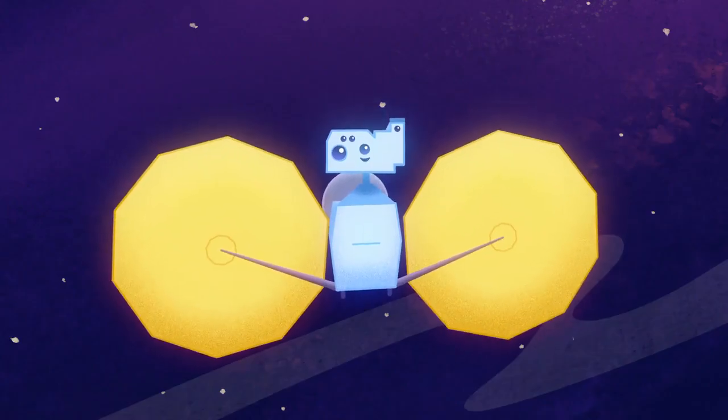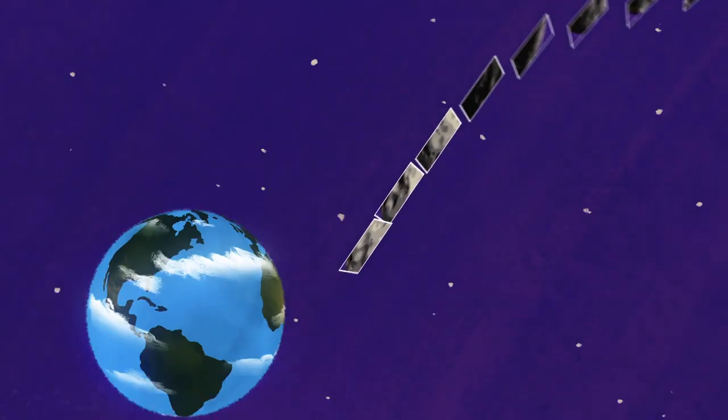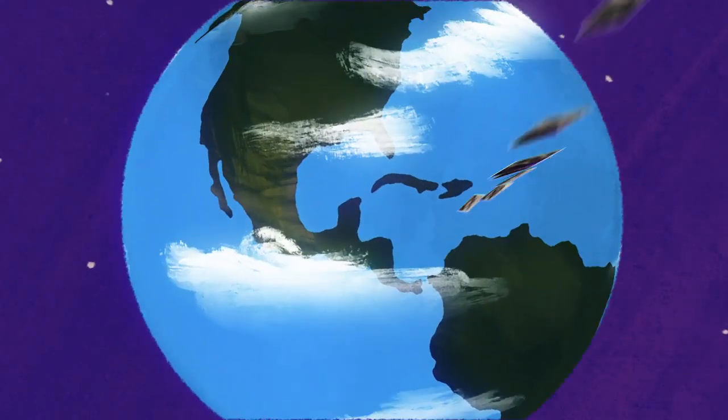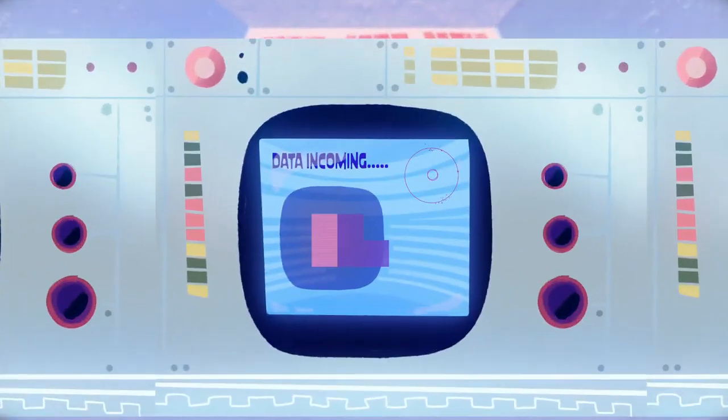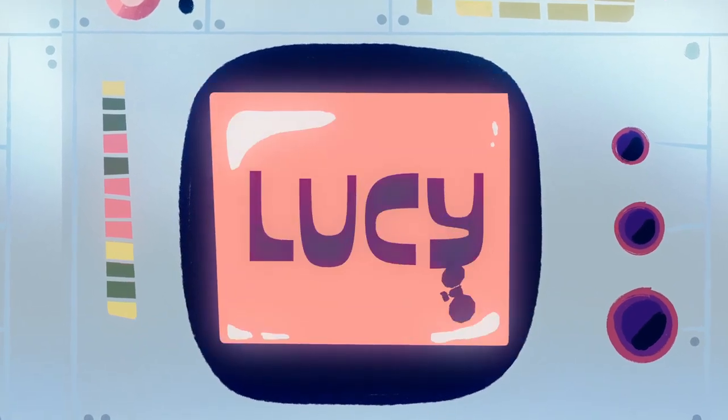It's not only the data encoded in the signals, but the properties of the signals themselves. We know what time the spacecraft sent the data and when it was received on Earth. We can calculate how long the signal took to travel at the speed of light, which gives us information about how far Lucy is from Earth.